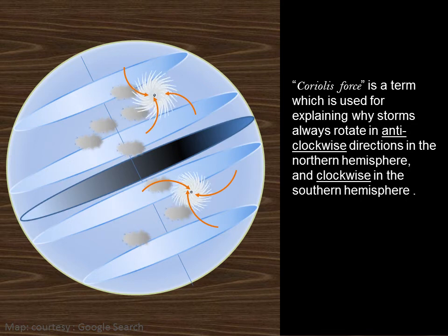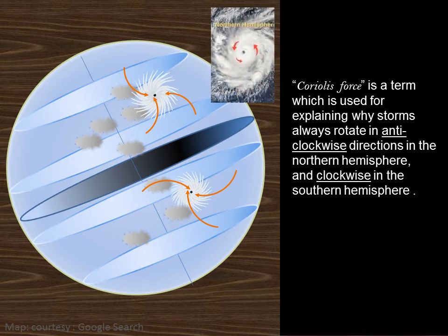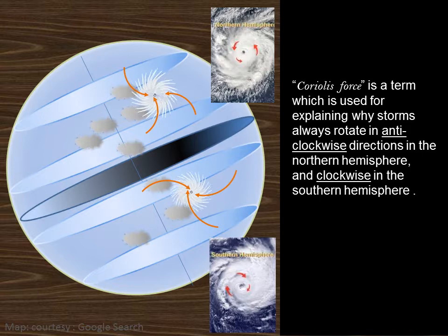Coriolis force is a term which is used for explaining why storms always rotate in anti-clockwise directions in the northern hemisphere and clockwise in the southern hemisphere.